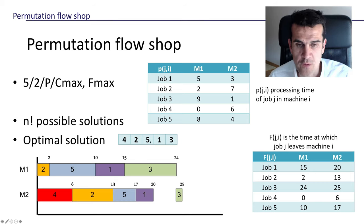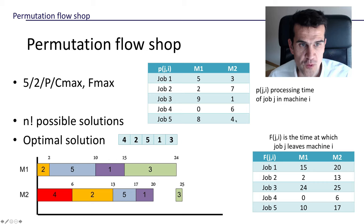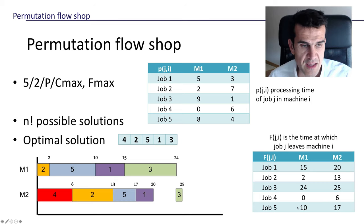The next job in the sequence is job five, which enters machine one as soon as it is free at time two, when job two finishes there. It stays at machine one for eight time units, leaving at time 10. Machine two is busy again, so job five waits until job two leaves machine two at time 13, then stays on machine two for four time units, from time 13 to time 17. So job five leaves machine one at time 10 and machine two at time 17.